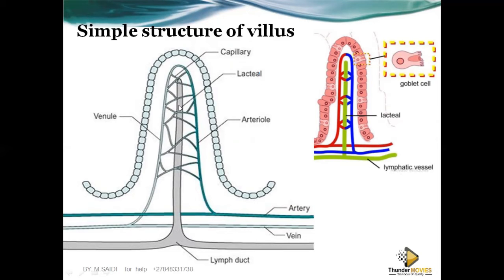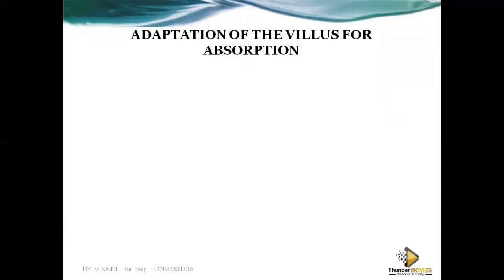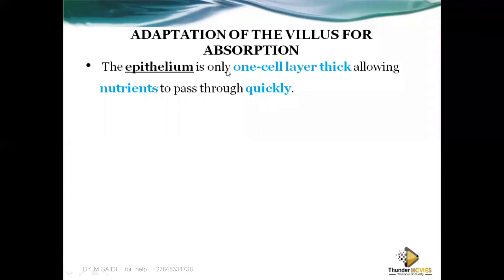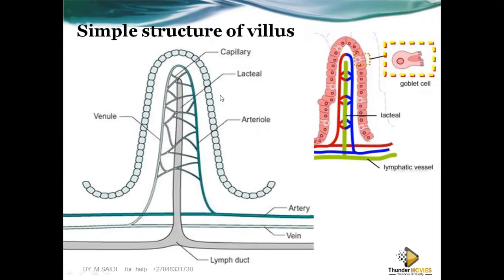The lacteal duct is very important for the absorption and transportation of fats, which are transported independently of the blood. One key adaptation is that the epithelium is one cell thick, allowing nutrients to pass through quickly. Since the wall is just one cell thick, nutrients can cross into the bloodstream very fast.